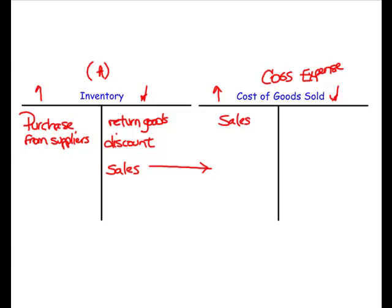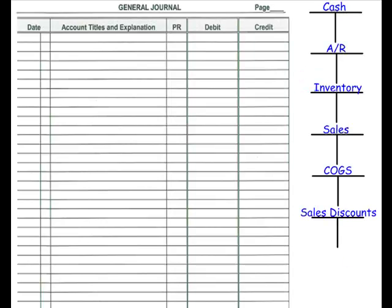Let's have a look at the transactions listed in the question and record them in the general journal. As we go through those transactions, we'll update the T accounts on the side of the paper. In the first transaction, on February 1st, the company sold merchandise with a cost of $2,700 for $3,400, terms 2% 10 days, net 30.